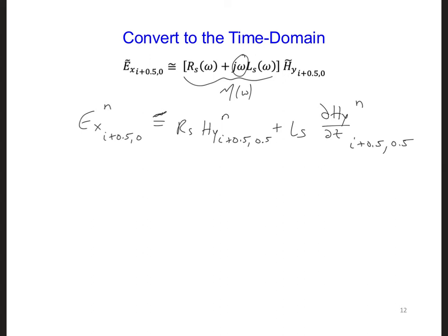Now, just as we approximated the partial time derivative in Maxwell's equations using central differencing, we can apply central differencing here to this partial time derivative. So if we do that, then this term is going to be HY n plus 0.5 minus HY at n minus 0.5, and both are at the same location, just above the EX component that we're trying to solve for, divided by delta t.